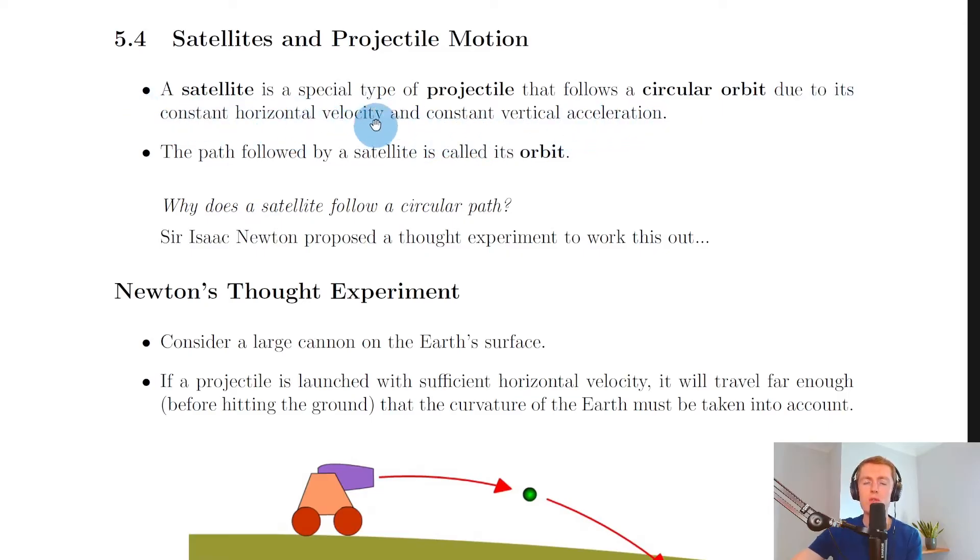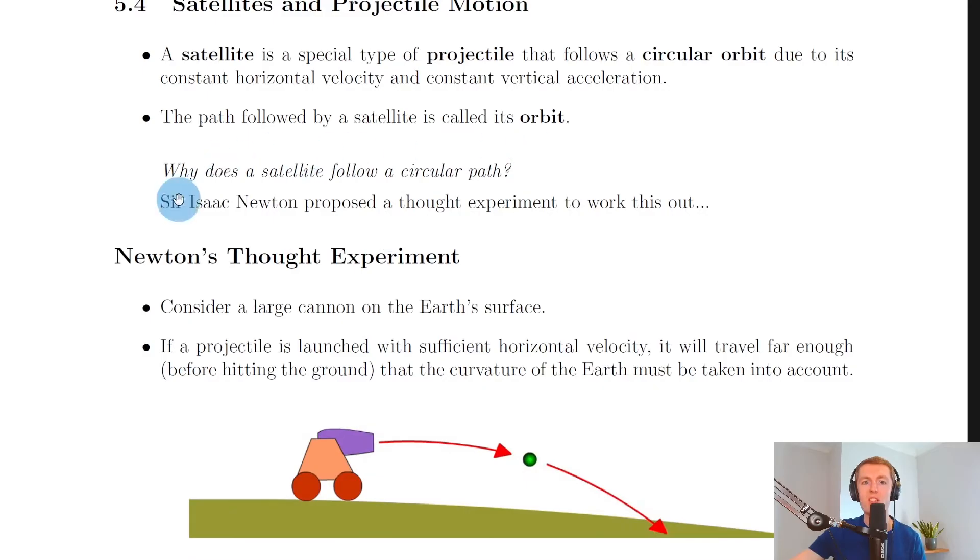Remember these two key things: constant horizontal velocity and constant vertical acceleration are what makes a projectile follow that curved trajectory. The circular orbit traced out by a satellite is projectile motion because it has these two things. The path followed by a satellite is called its orbit.